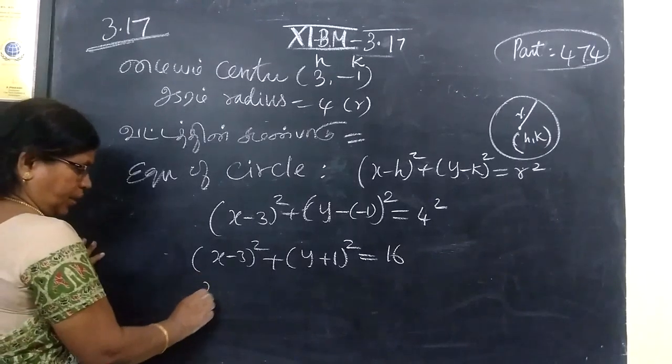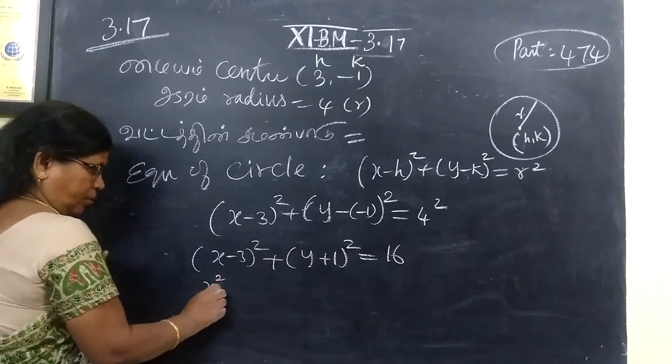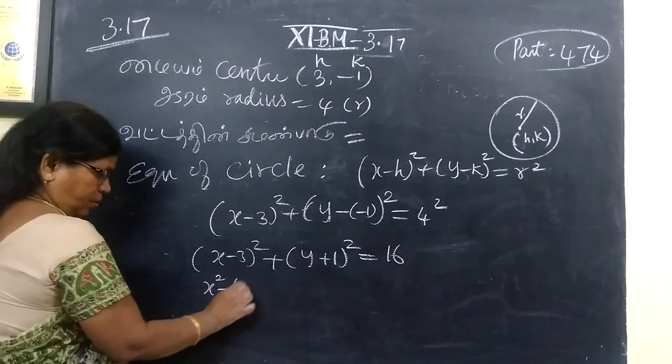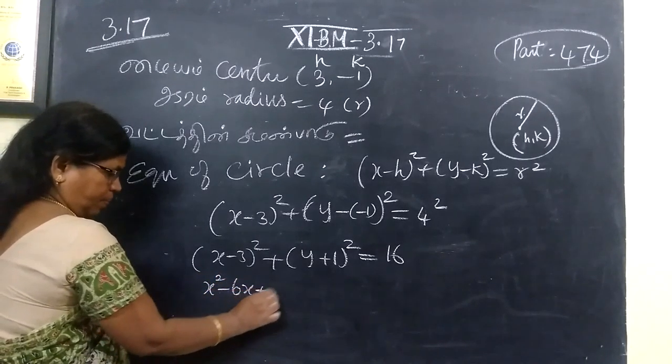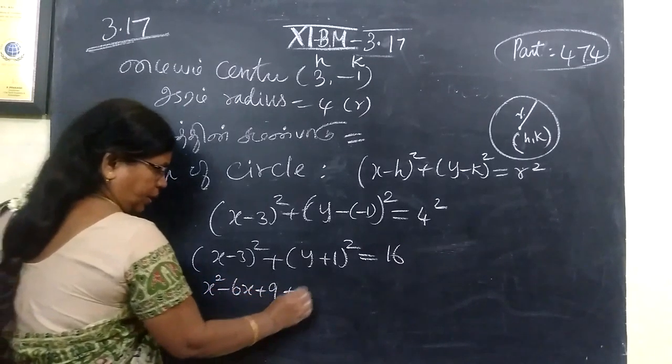Now expanding using the identity: a minus b whole square equals a squared minus 2ab plus b squared.